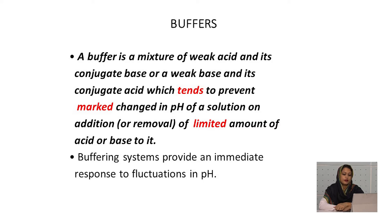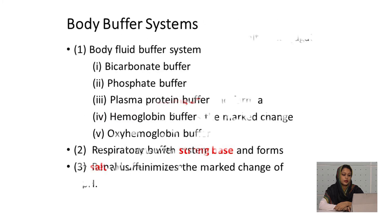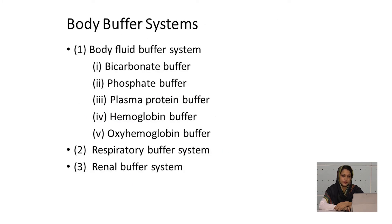The buffering system provides an immediate response to fluctuation in pH. A buffer typically consists of a solution which contains a weak acid mixed with the salt of the conjugate base of that acid. The principle is: the salt reacts with strong acid and forms a weak acid, thus minimizing the marked change of pH; and the acid reacts with strong base to form the salt, thus minimizing the marked change of pH.